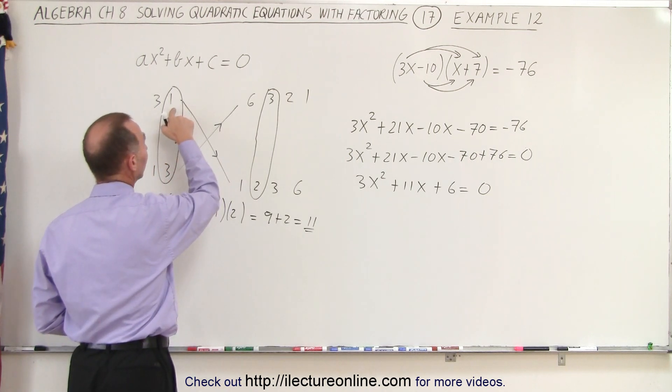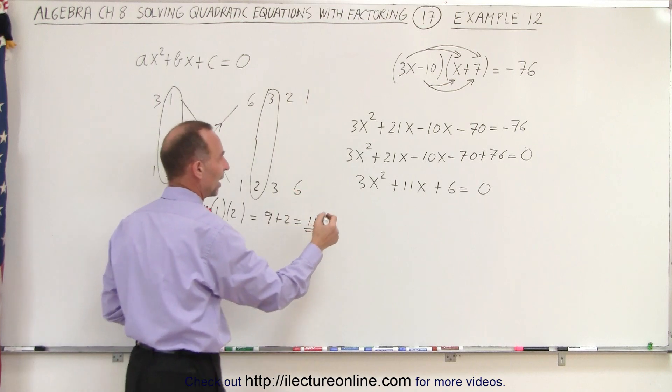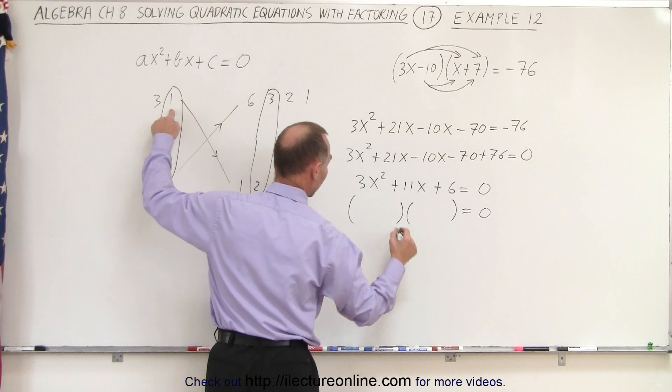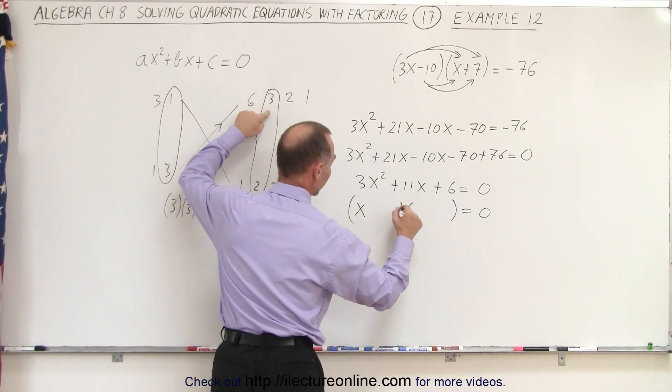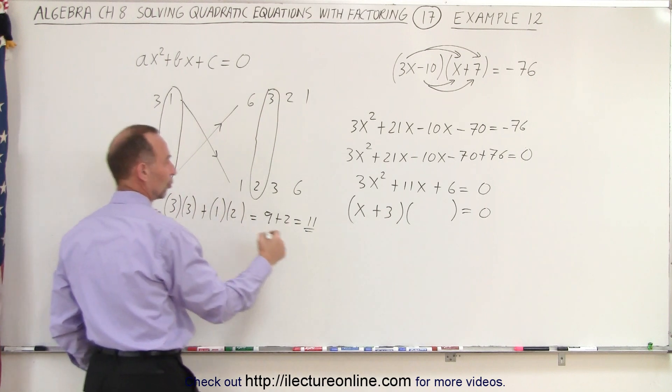So x plus 3, 3x plus 2 is the proper factored form. So here we have x plus 3, and here we have 3x plus 2.